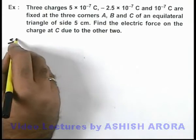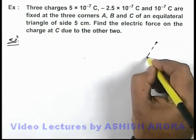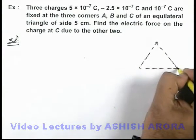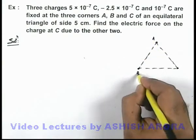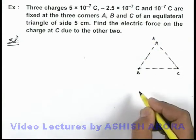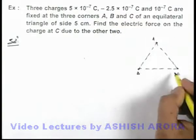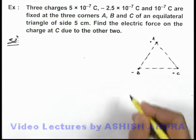Now if we just draw the physical situation here, we can see on the vertices of an equilateral triangle, three charges are placed: this A, this B, and this C. And here we can see that C is a positive charge, A is a positive charge, and B is a negative charge.